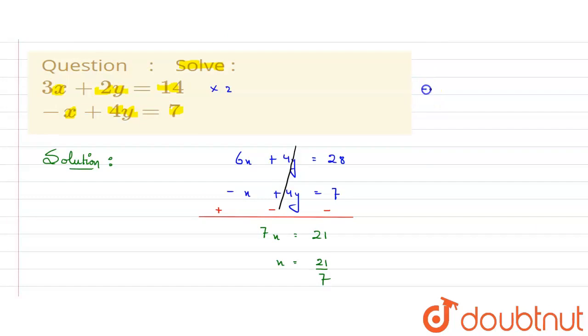Now let's consider the second equation, that is minus x plus 4y equals 7. Now we have the value of x with us, this is 3. So minus 3 plus 4y equals 7. From here we need to find the value of y.